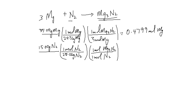The calculation is: 15 divided by 28.02, which works out to be equal to 0.5353 moles of Mg₃N₂.